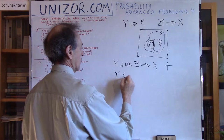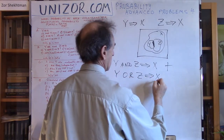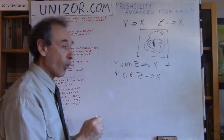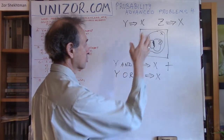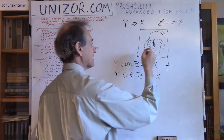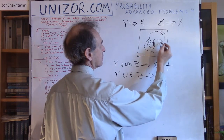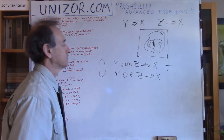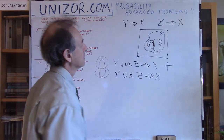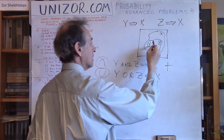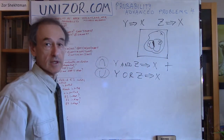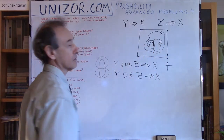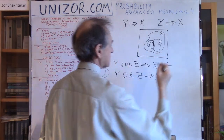Next: from Y OR Z follows X — is this true? OR is represented as union. I know the point falls inside Y or inside Z, so it's inside the union of Y and Z. Since Y is inside X and Z is inside X, their union is obviously inside X as well. So if the point is within the union of Y and Z, it's also inside X — X happens. This is also a true condition.